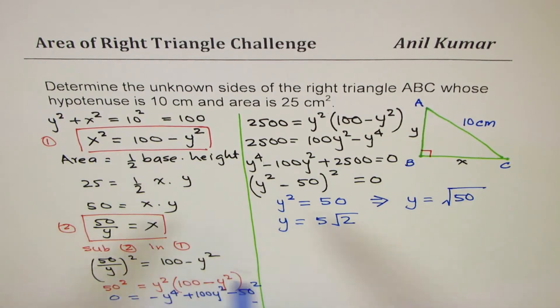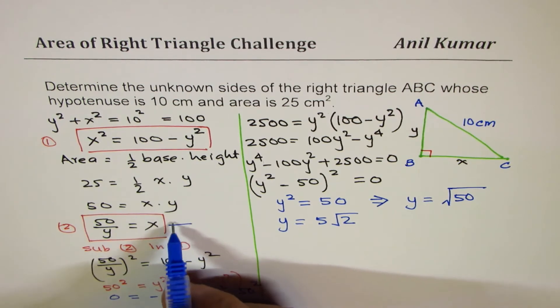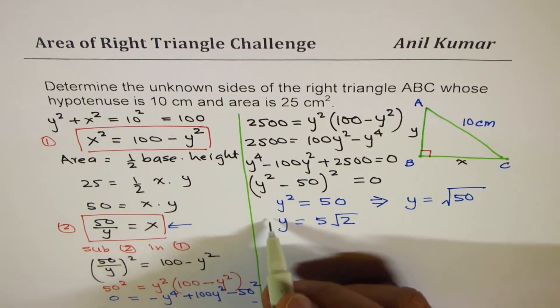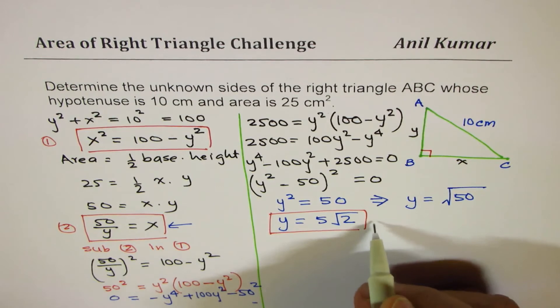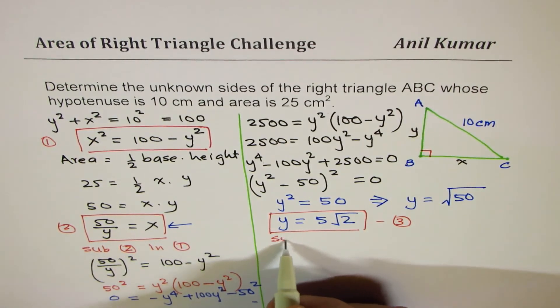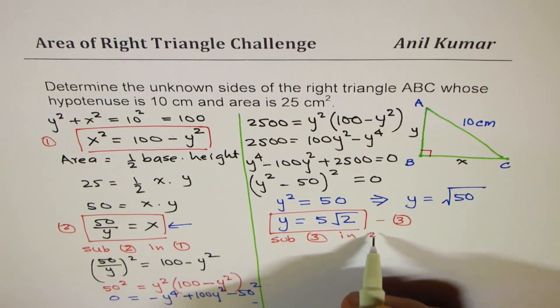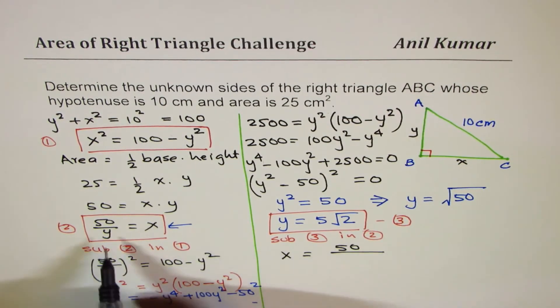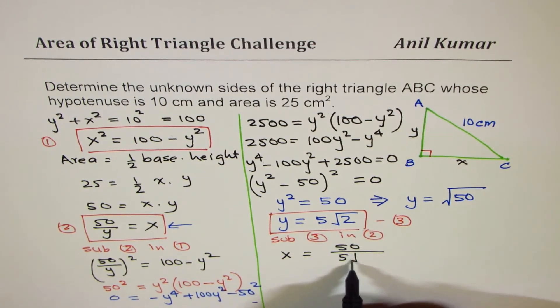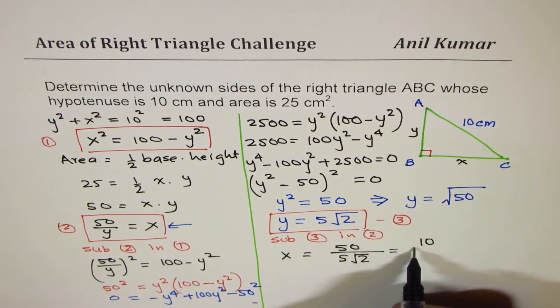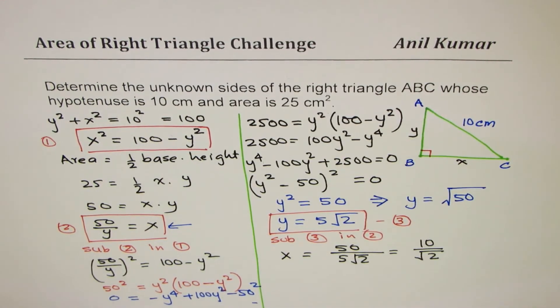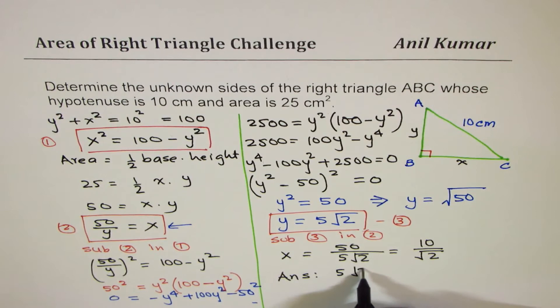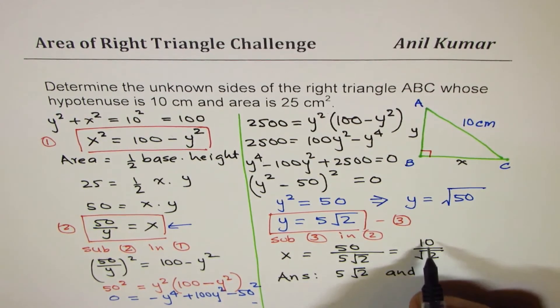Now we can find what X is from any one of our equations. So we'll use this equation. Let us say that this is equation number 3 for us. So let's substitute 3 into, then what we get? So we get X equals to 50 divided by, instead of Y, I'm writing 5 square root 2. So that gives us 10 over square root 2. All the units are in centimeters. So that is our answer. So our answer is, the two sides are 5 square root 2 and 10 square root 2.